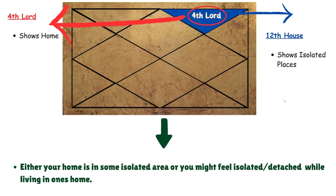The fourth lord shows home and the twelfth house shows isolated places. So either your home may be in some form of an isolated area, or you yourself might feel very isolated or detached when living in your own home, and you might feel detached from your family members while living there.